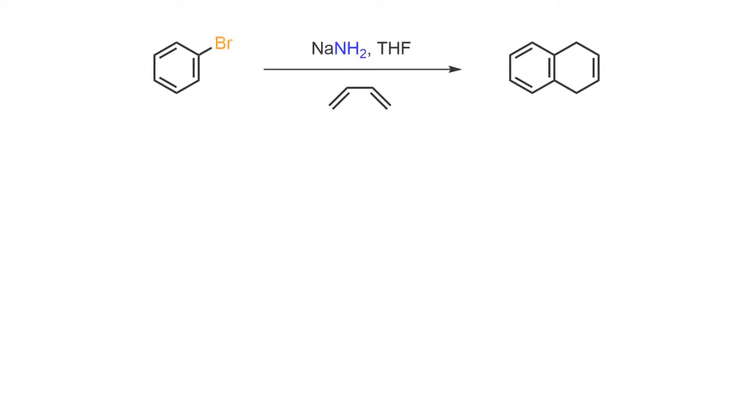Treatment of bromobenzene with sodium amide produces benzyne, which then undergoes a Diels-Alder cycloaddition in the presence of a conjugated diene.